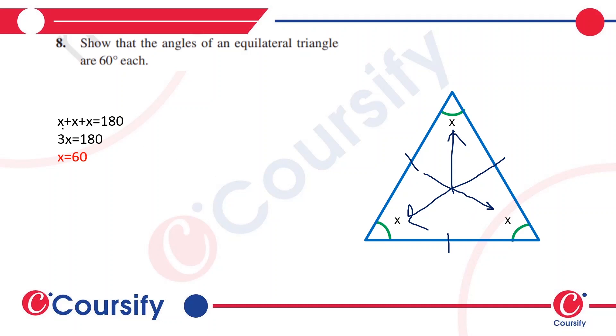By using the angle sum property, we get that x plus x plus x equals 180, so 3x equals 180. Therefore, x equals 60 degrees.